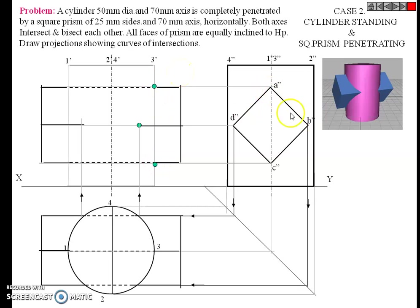The visible portion and invisible portion both overlap each other. A, B, C is visible and A, B, C is also the invisible side. So we draw this completely. A, B, C is visible. Thank you.